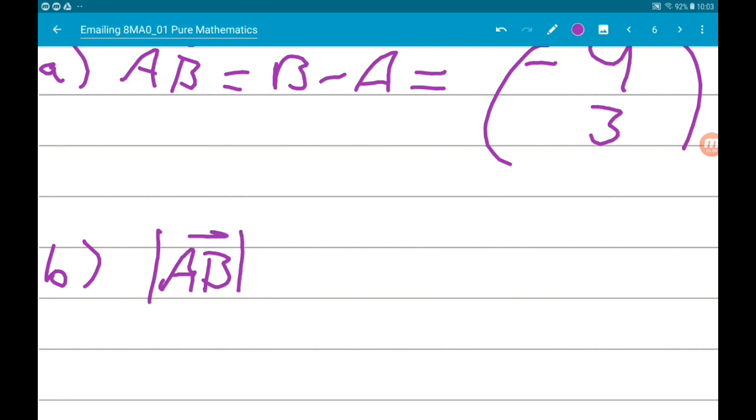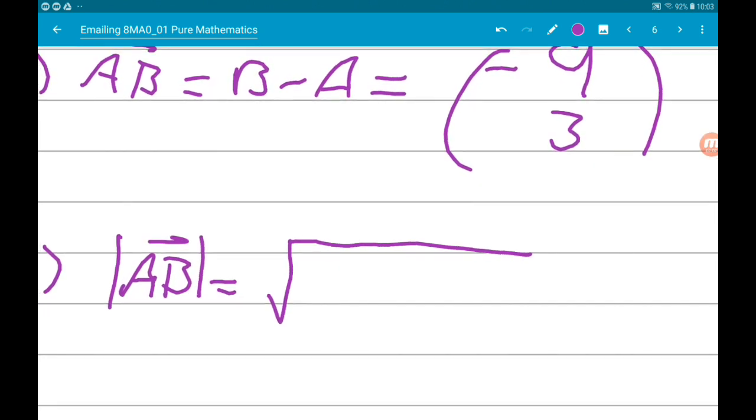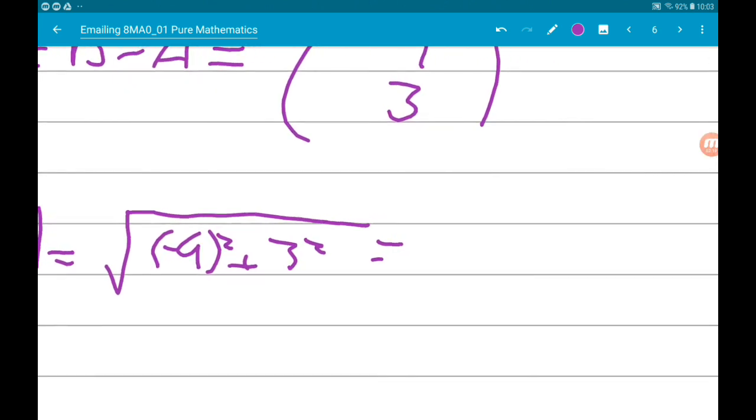The magnitude is the square root of each component squared, so -9 squared and 3 squared. That's going to give us the square root of 81 add 9. Now that's going to give us root 90.